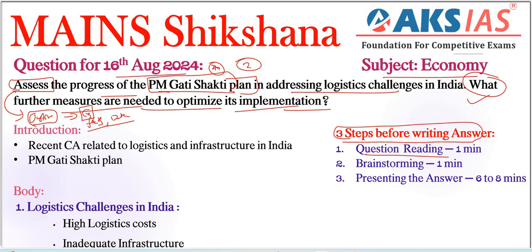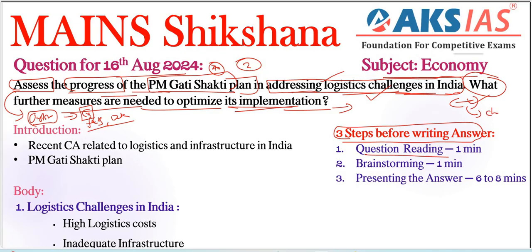Coming to keywords, what are the important keywords here? 'Progress' is one important keyword. Other than that, 'addressing logistic challenges in India' — we already have some logistical challenges in India, and addressing them through PM Gati Shakti plan progress is the essence of this question. The needed measures are clearly asked in the second part, but in between the two parts we need to connect challenges in implementation as a connectivity point.